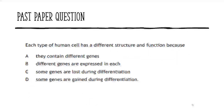Let's finish by practicing some past paper questions. Remember, if you're doing a unit-by-unit approach you won't have the multiple choice, but it's still good for practicing knowledge. Question one: each type of human cell has a different structure and function because — A: they contain different genes; B: different genes are expressed in each; C: some genes are lost during differentiation; or D: some genes are gained during differentiation. Pause the video and select your answer.